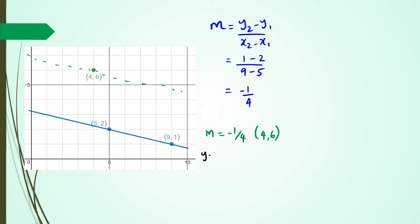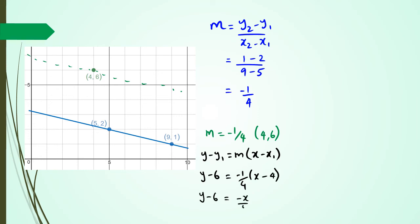To find the equation of the green line I'm going to use the point (4, 6). So y minus y1 equals m times x minus x1, giving y minus 6 equals negative one quarter multiplied by x minus 4. Expanding this I should have negative x over 4 plus 1, and rearranging I'm going to have y equals negative x over 4 plus 7.